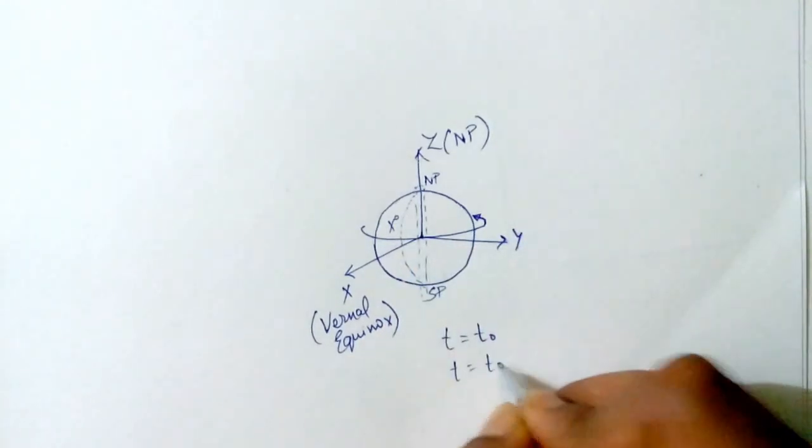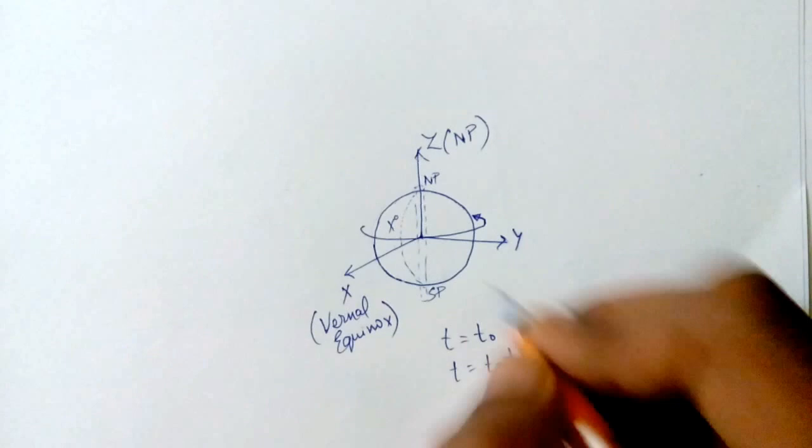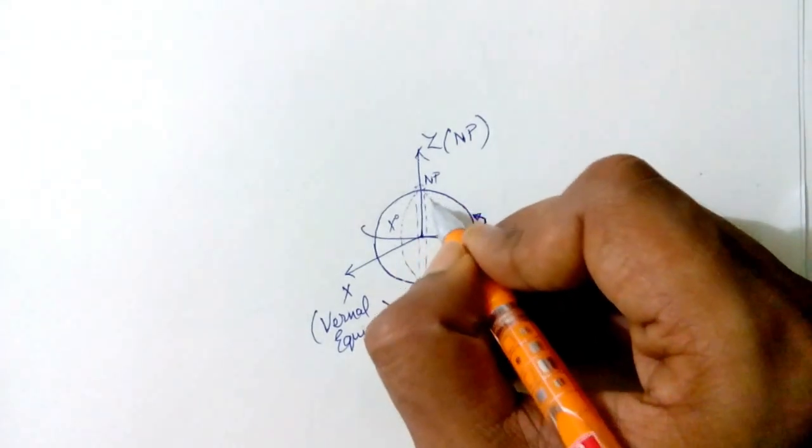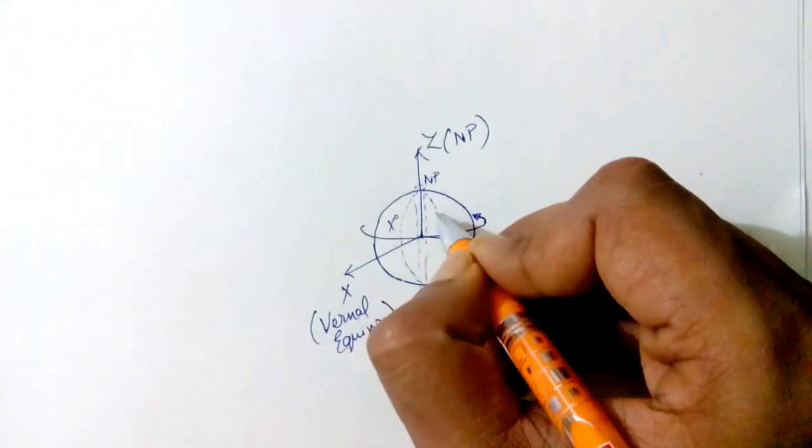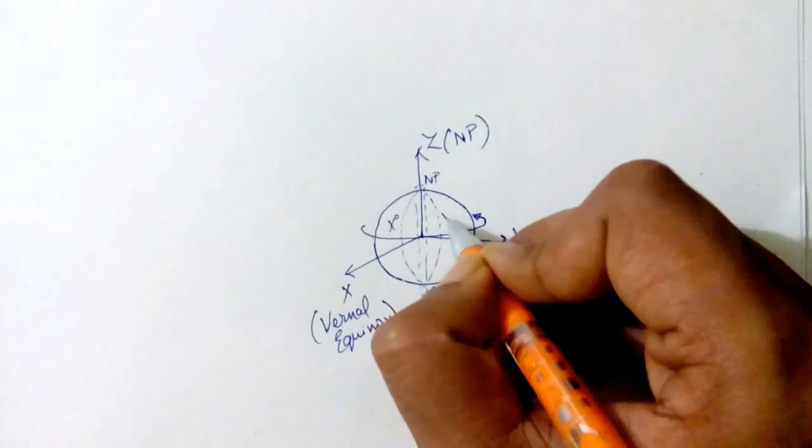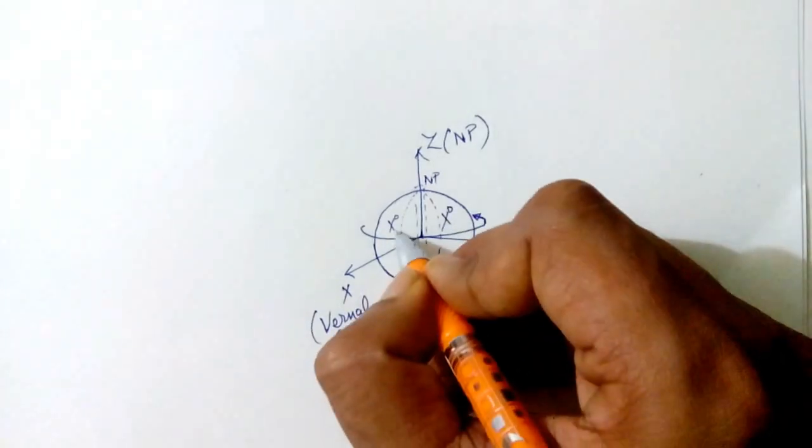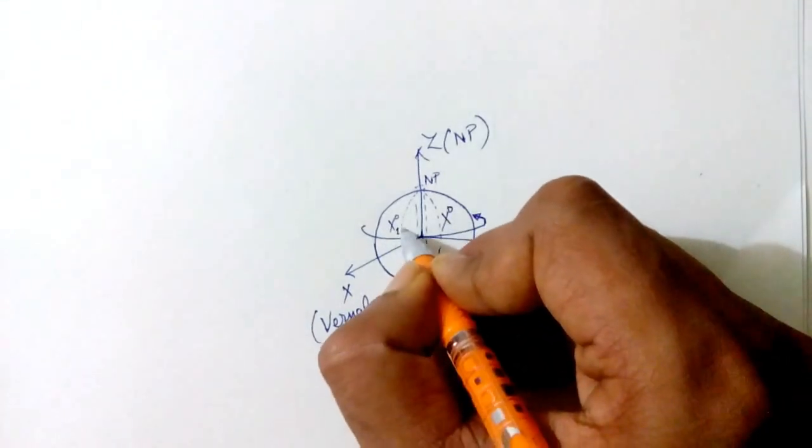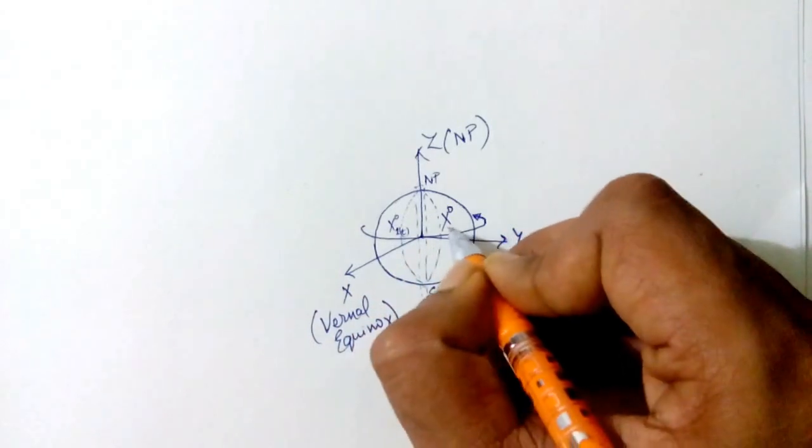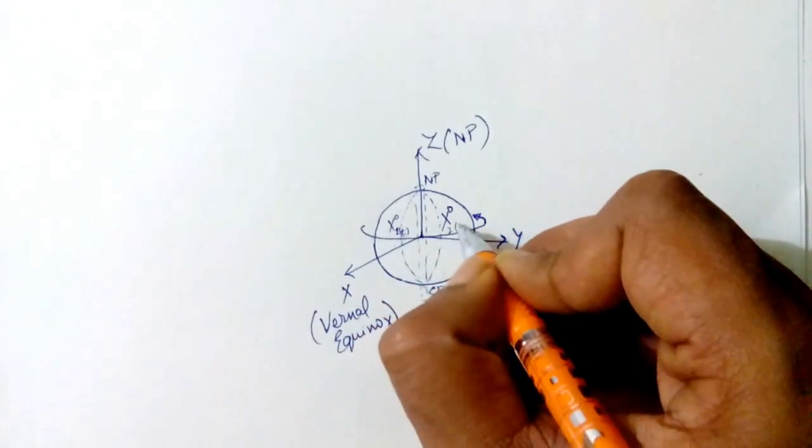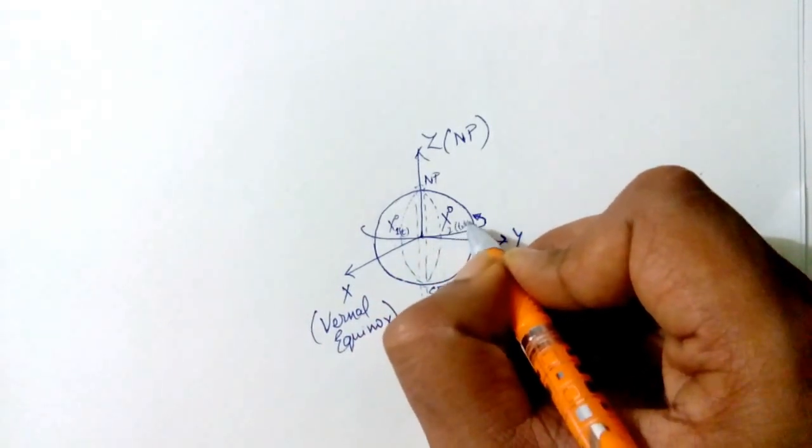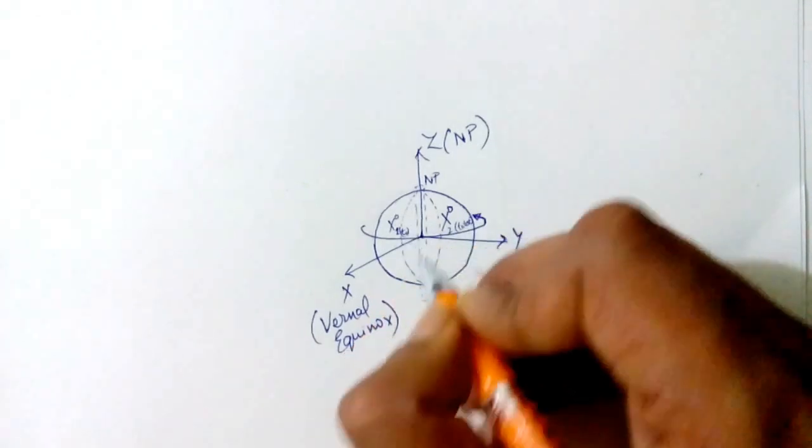At time equals t0 plus delta t, the position of x degree longitude won't be here. It will be somewhere over here. Suppose this is position 1 at time t, then this will be position 2 at time t0 plus delta t.